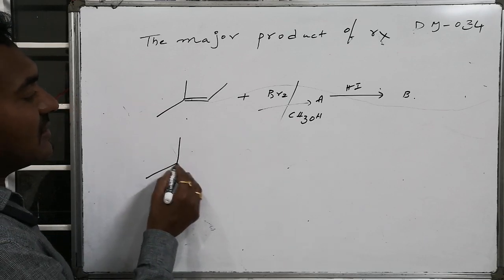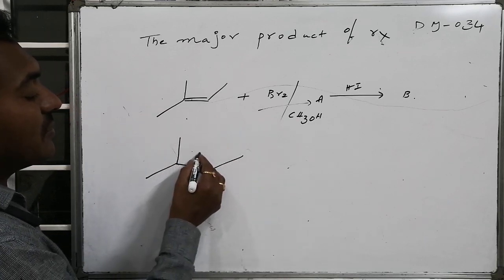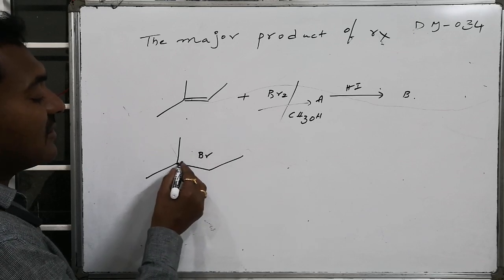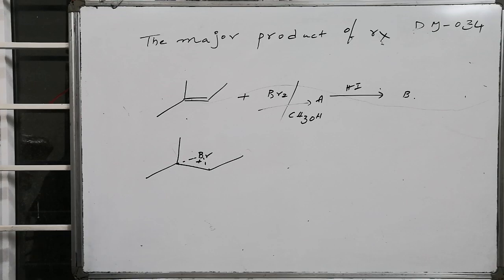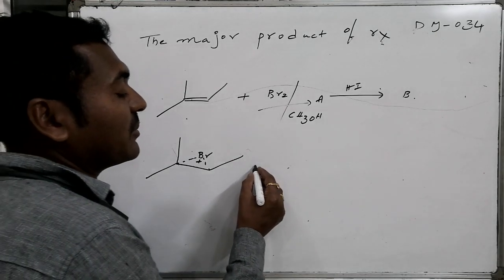The double bond attacks over the Br+ as a result cyclic halonium ion, that is cyclic bromine ion formation takes place.